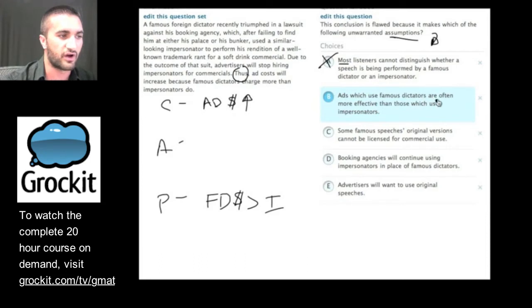How about B? Ads which use famous dictators are often, we don't know what often necessarily means. It doesn't say more often or anything. It just says often, more effective than those which use impersonators. Okay. So this says that they're more effective, but we're sort of talking about cost on these questions, right? We're talking about cost. So I think we can get rid of this answer choice as well. Some famous speeches. So here's some language. Some famous speeches. Not all, not most, but some famous speeches, original versions cannot be licensed for commercial use. So does this have to be true that some famous speeches, original versions cannot be licensed? Let's hold on to this one. D. Booking agencies will continue using impersonators in place of famous dictators. Well, this is saying that the ads are going to go up because dictators cost more. I don't see why it must be true that they will continue using impersonators.